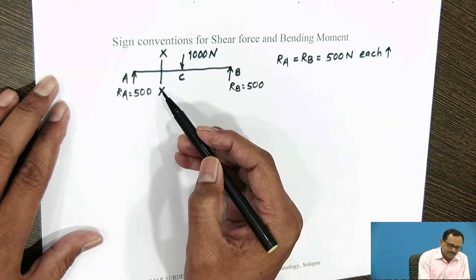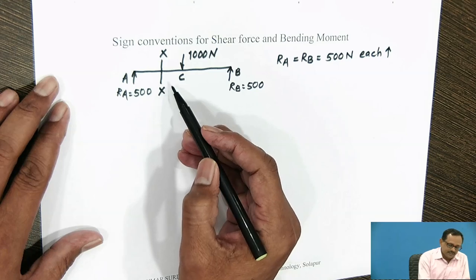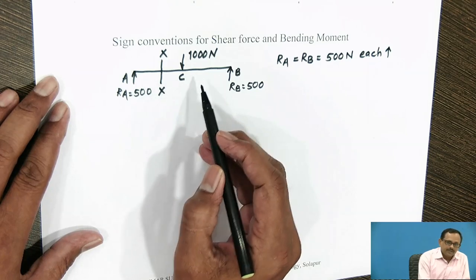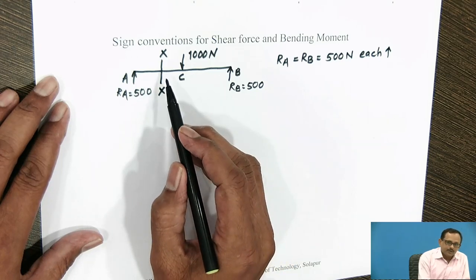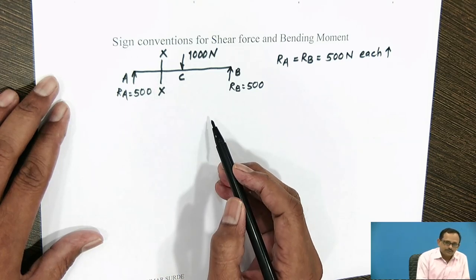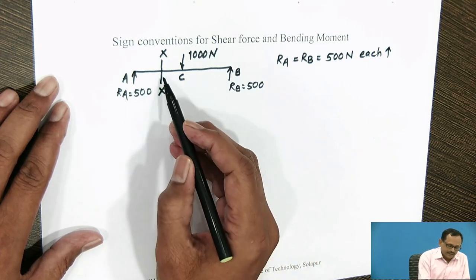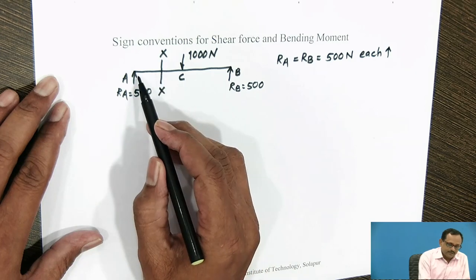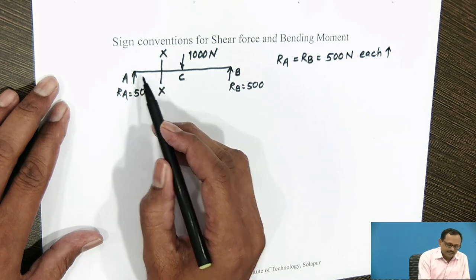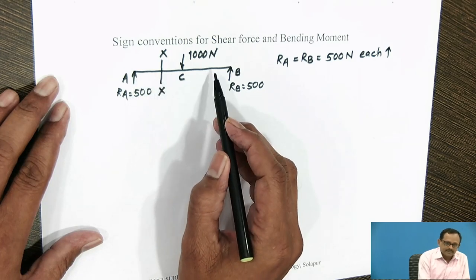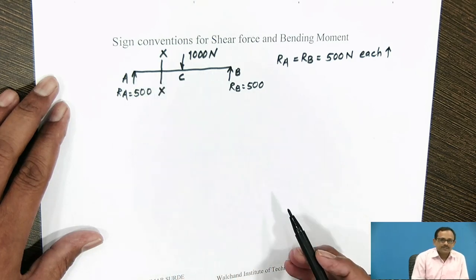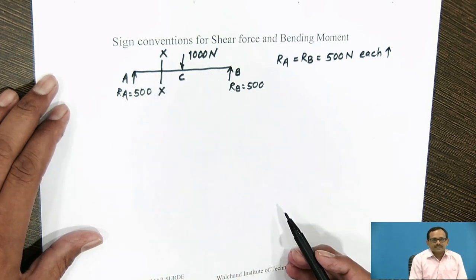By imagining the section XX, the beam AB is divided into two portions — the left side of section XX and the right side of section XX.